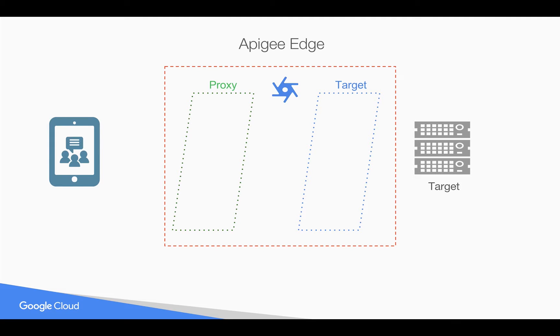As you know, an Apigee API proxy is divided into proxy endpoint and target endpoint, where you can write target-specific functionality in the target endpoint and proxy-specific functionality in the proxy endpoint.